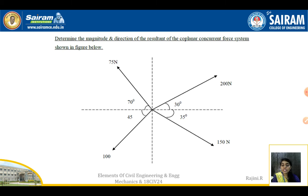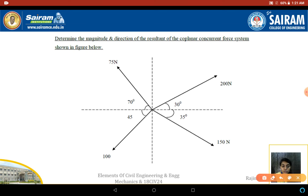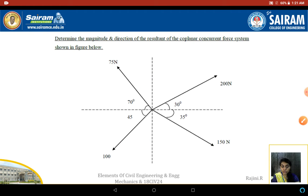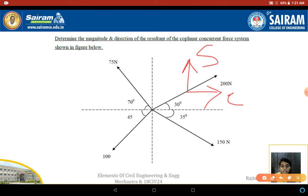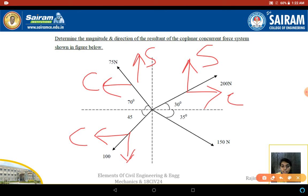Moving on to the next problem: determine the magnitude and direction of the resultant of the coplanar concurrent force system shown in the figure. Here we have four forces — 200 N, 75 N, 100 N, and 150 N — all inclined. Each force is resolved into horizontal and vertical components: 200 cos 30°, 200 sin 30°; 75 cos 70°, 75 sin 70°; 100 cos 45°, 100 sin 45°; 150 cos 35°, 150 sin 35°.